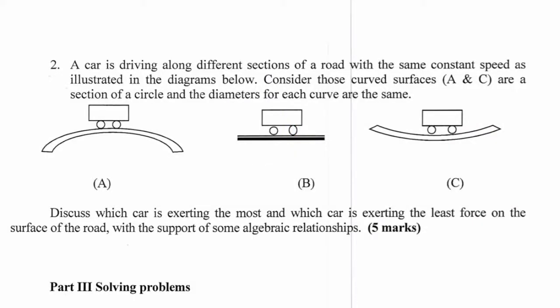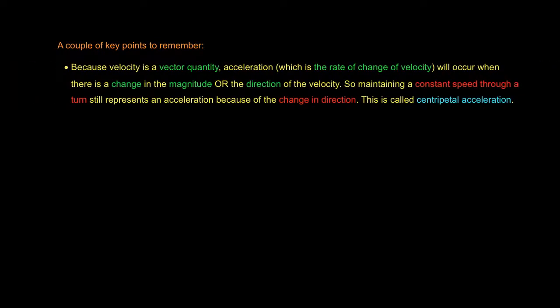Okay, before we get started I want to highlight a couple of things about circular motion that I think we have to pay attention to at all times when we're having this discussion. So our key points to remember go as follows: we have to recognize that because velocity is a vector quantity, acceleration which is the rate of change of velocity will occur when there is a change in the magnitude or the direction of the velocity. So maintaining a constant speed through a turn still represents an acceleration because of the change in direction.